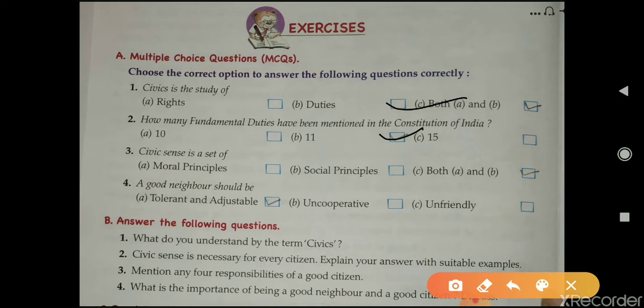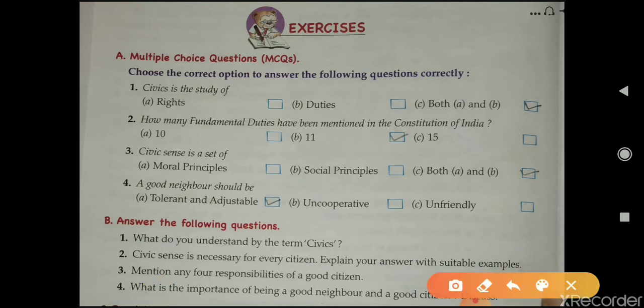Civic sense is a set of both A and B — that is moral principles and social principles — so the answer is C. A good neighbor should be tolerant and adjustable, so the answer is A.